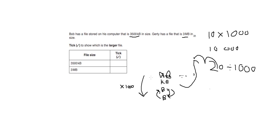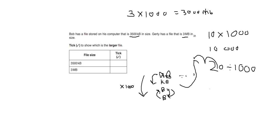Now comparing 3500 kilobytes versus 3 megabytes. The easiest way is to convert megabytes into kilobytes: 3 megabytes multiplied by 1000 gives 3000 kilobytes. We can see that 3000 kilobytes is smaller than 3500 kilobytes, therefore 3500 kilobytes is the larger value.